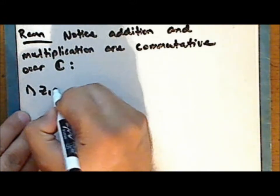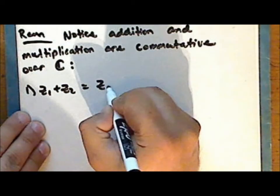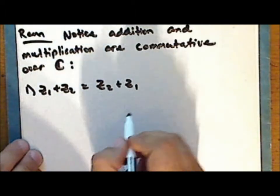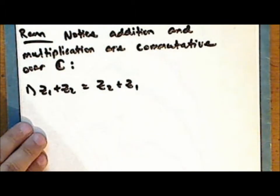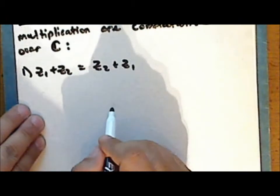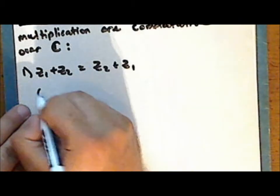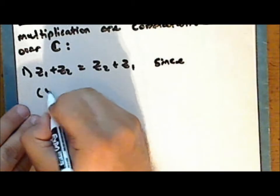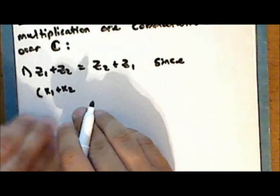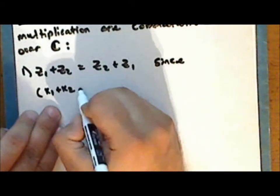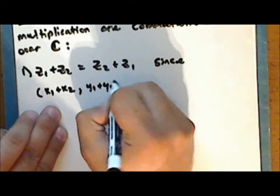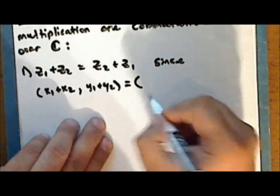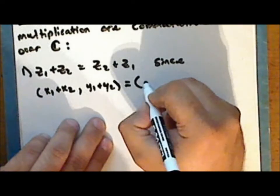As a vector space, we have a notion of addition of vectors — that is, addition of two ordered pairs of real numbers. z sub 1 plus z sub 2 is the sum of ordered pairs (x₁, y₁) plus (x₂, y₂), which equals the ordered pair whose real part is x₁ plus x₂ and whose imaginary part is y₁ plus y₂.